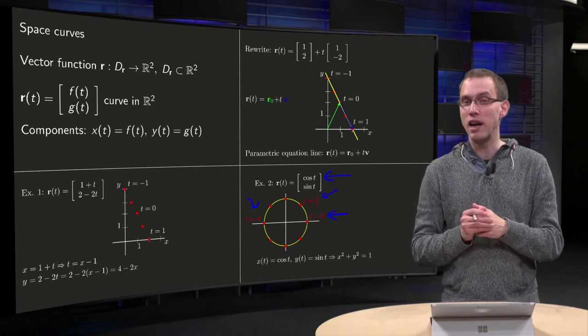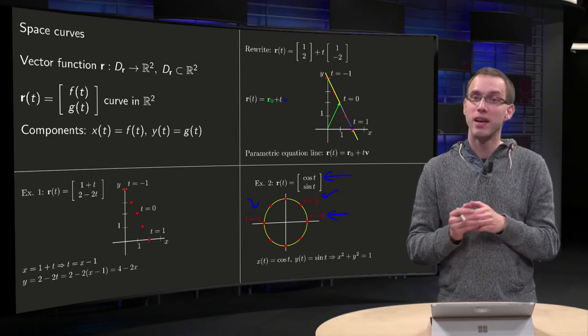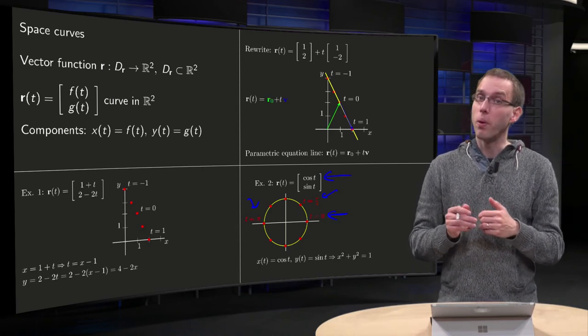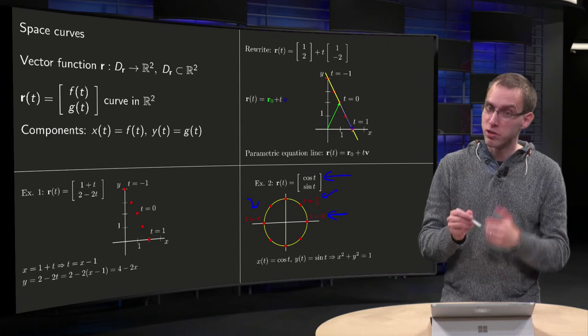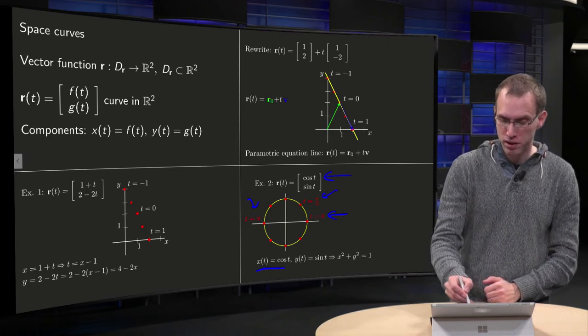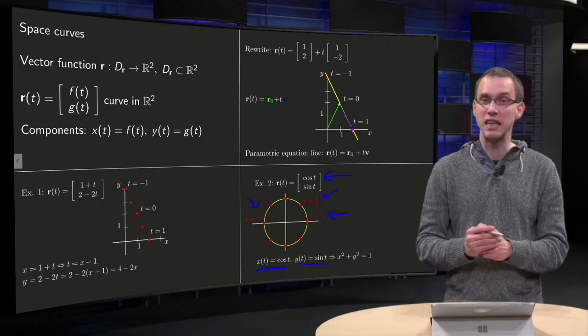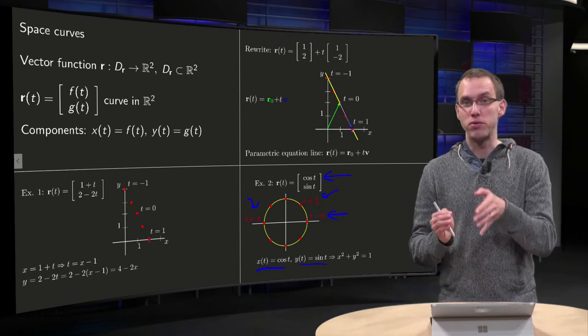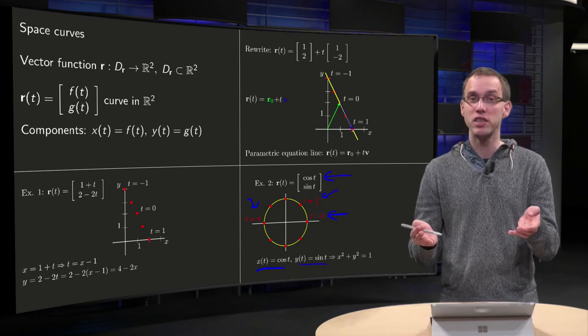Then we see, hey, it looks like all those points are in a circle. And is this true? Well, we can see, but now we have to use a slightly different trick. We have X of T equals cosine T and Y of T equals sine T. If we compute X squared plus Y squared, we get sine squared T plus cosine squared T.